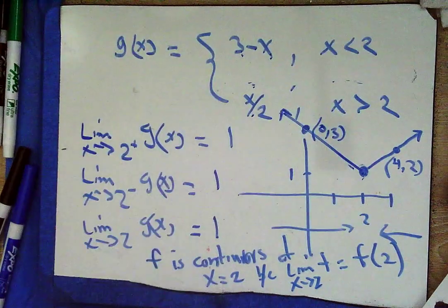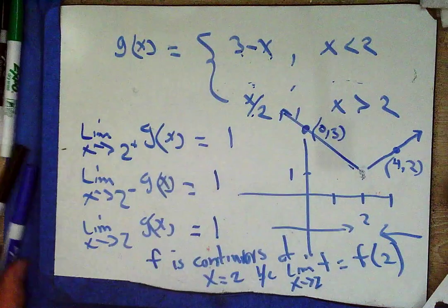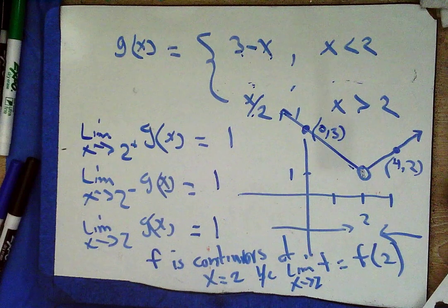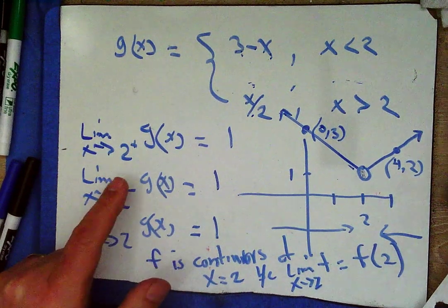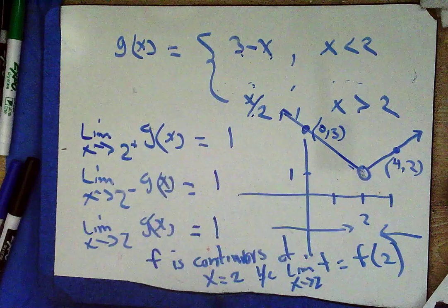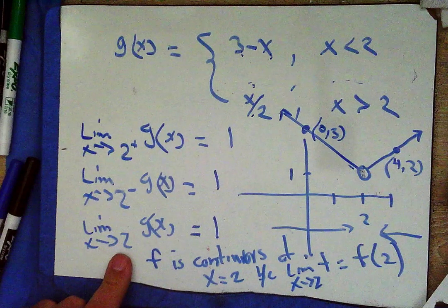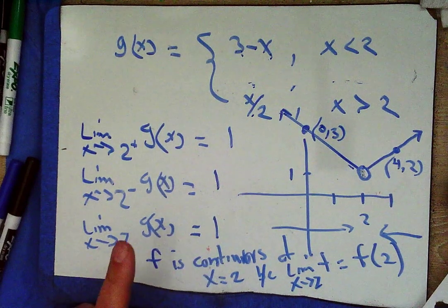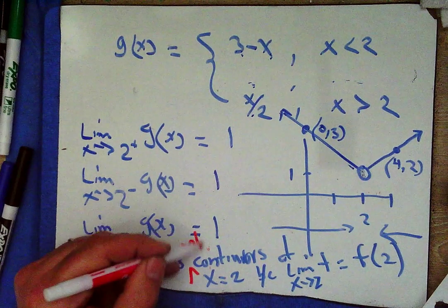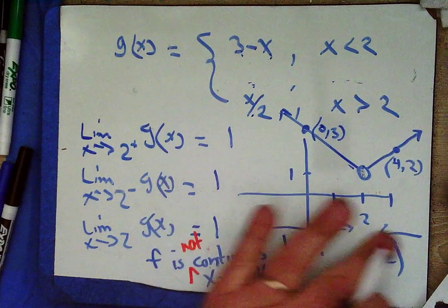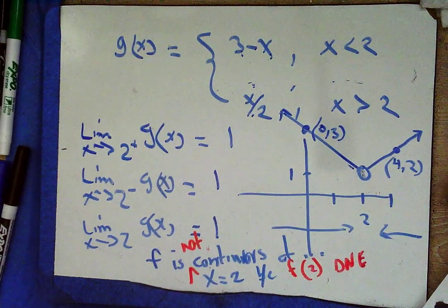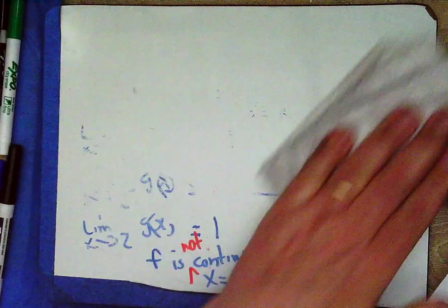What if we remove the middle line from the piecewise function? The one-sided limits are unchanged — both still approach 1 — so the two-sided limit is still 1. But f of 2 no longer exists. Therefore, f is not continuous at x equals 2 because f of 2 does not exist.